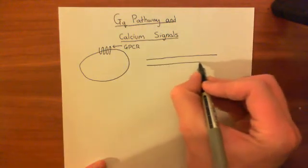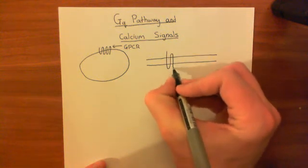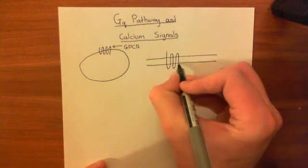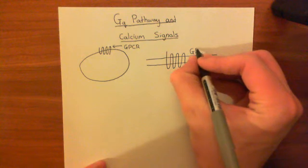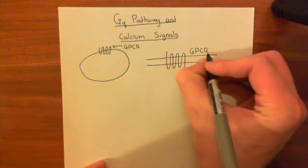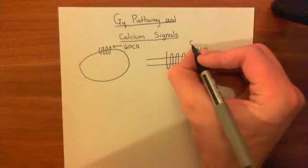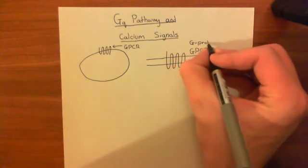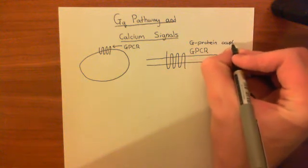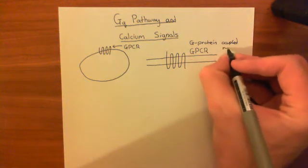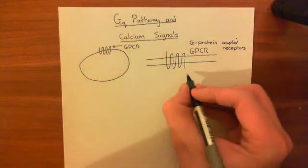Here is our GPCR, which is this 7-transmembrane receptor, meaning that it has 7 membrane-spanning alpha helices. The reason it's called a GPCR is that it stands for G protein coupled receptor, and indeed it is coupled to a G protein. We are going to look specifically at GPCRs which are coupled to the GQ G protein.